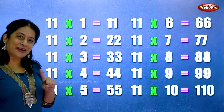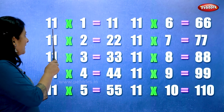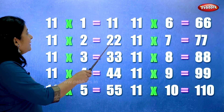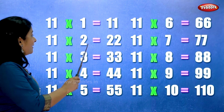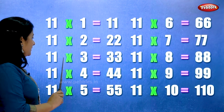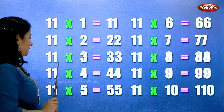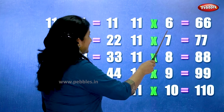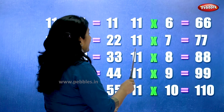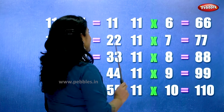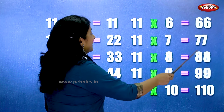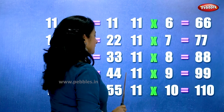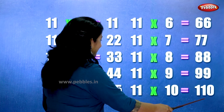Let's learn the table of eleven one more time. Eleven ones are eleven. Eleven twos are twenty-two. Eleven threes are thirty-three. Eleven fours are forty-four. Eleven fives are fifty-five. Eleven sixes are sixty-six. Eleven sevens are seventy-seven. Eleven eights are eighty-eight. Eleven nines are ninety-nine. Eleven tens are hundred and ten.